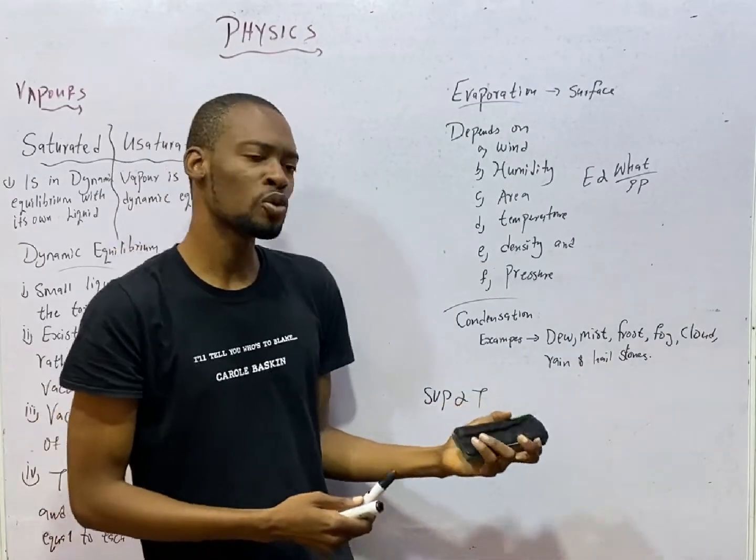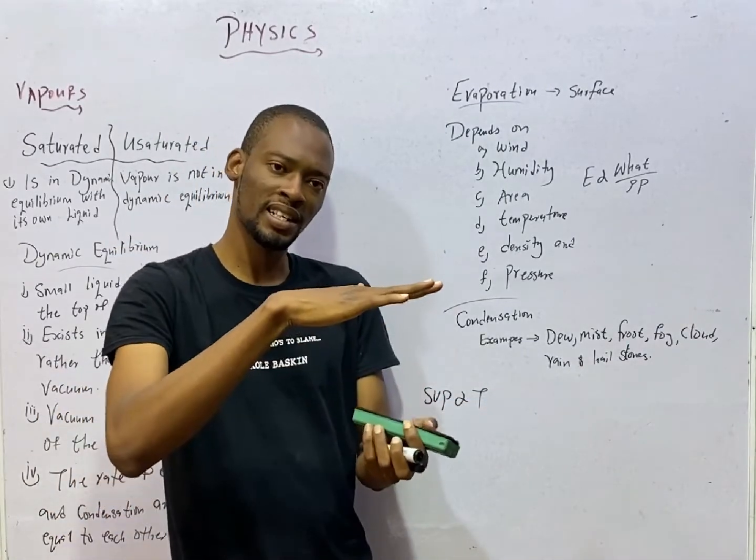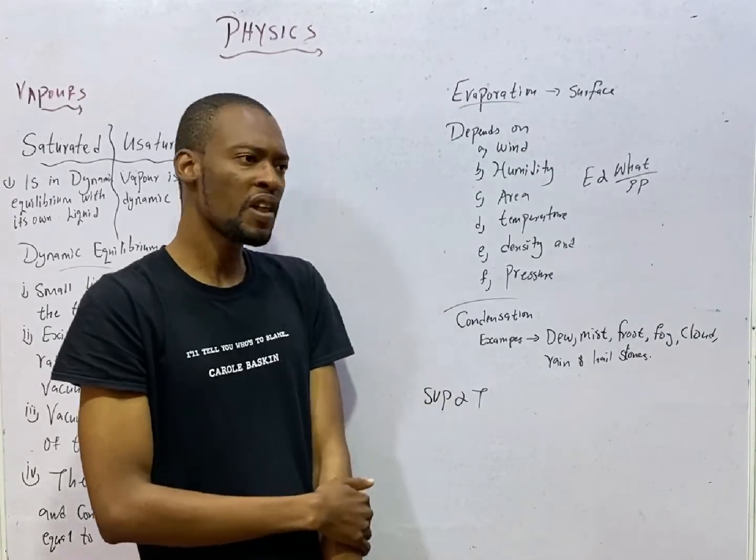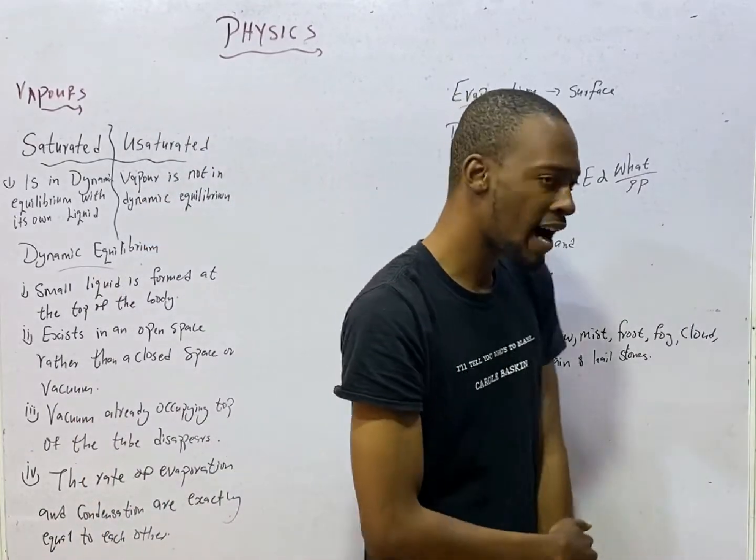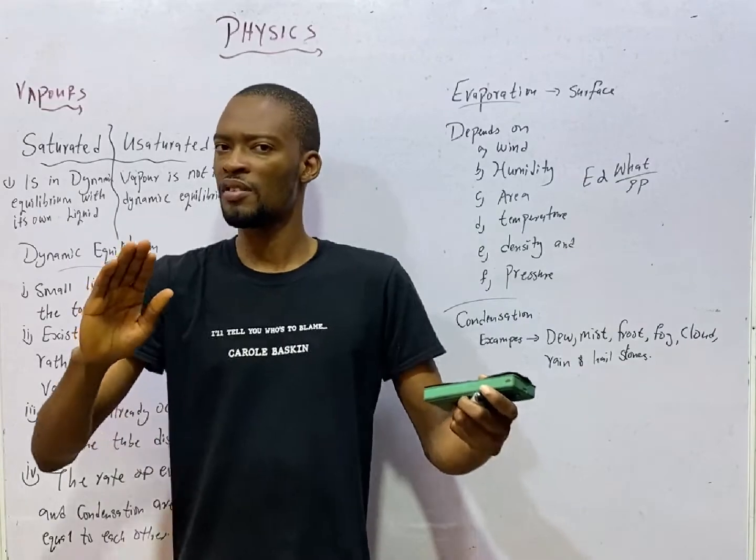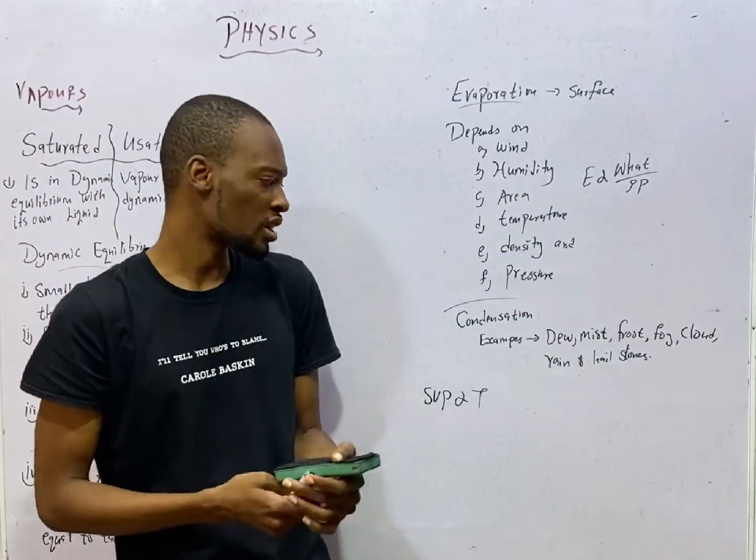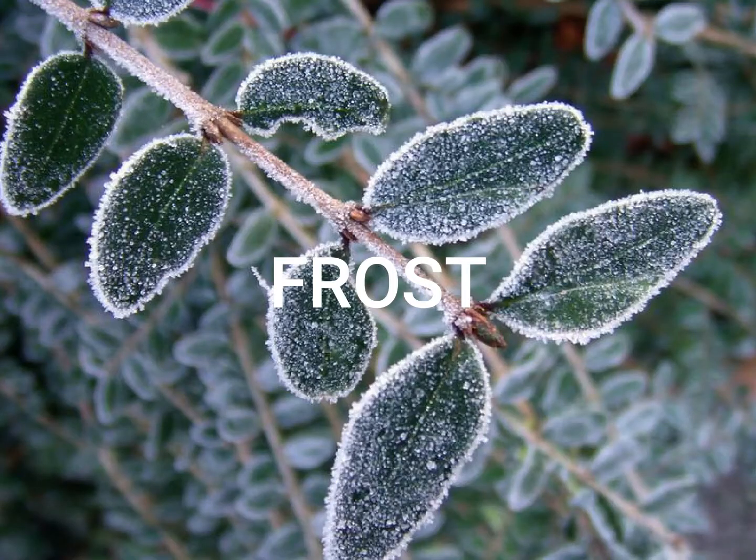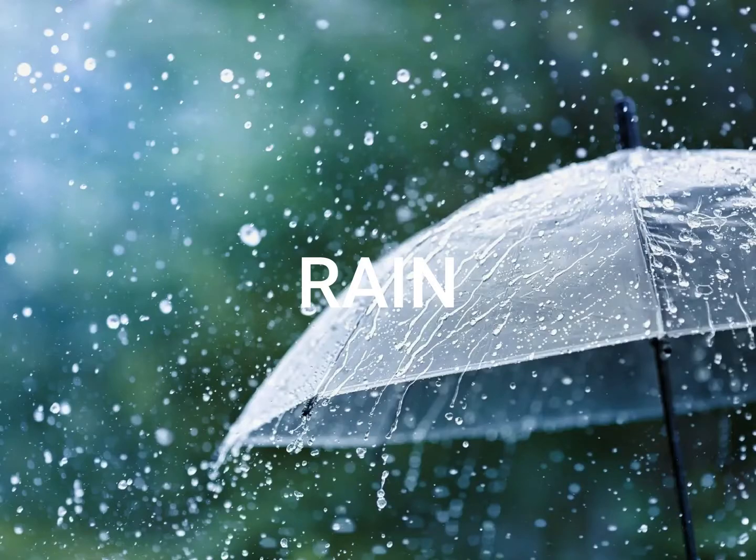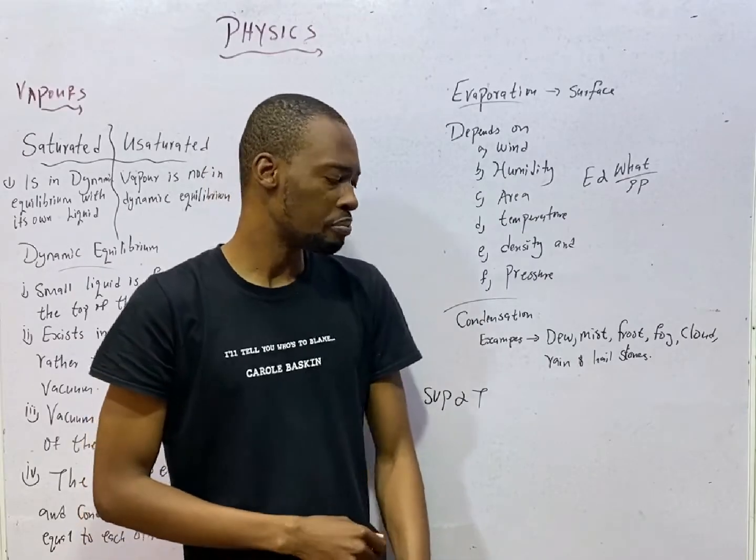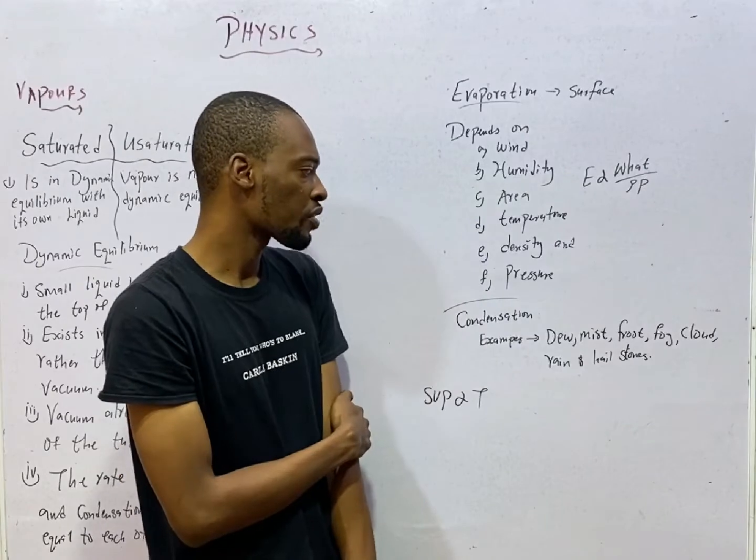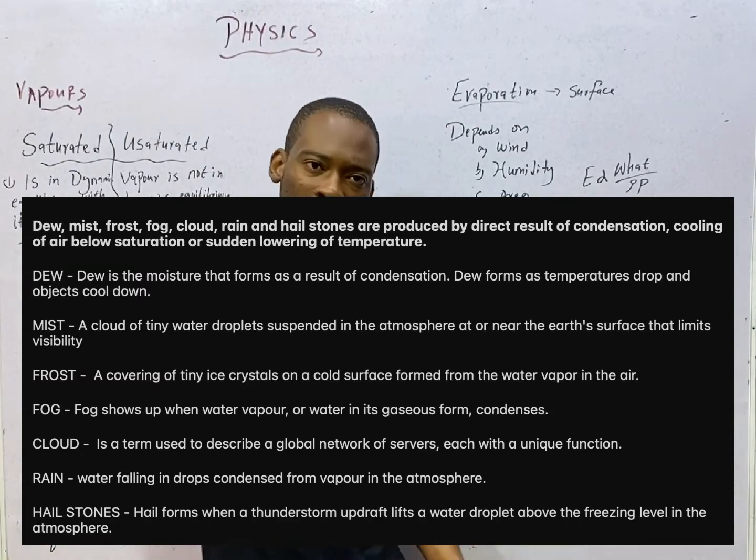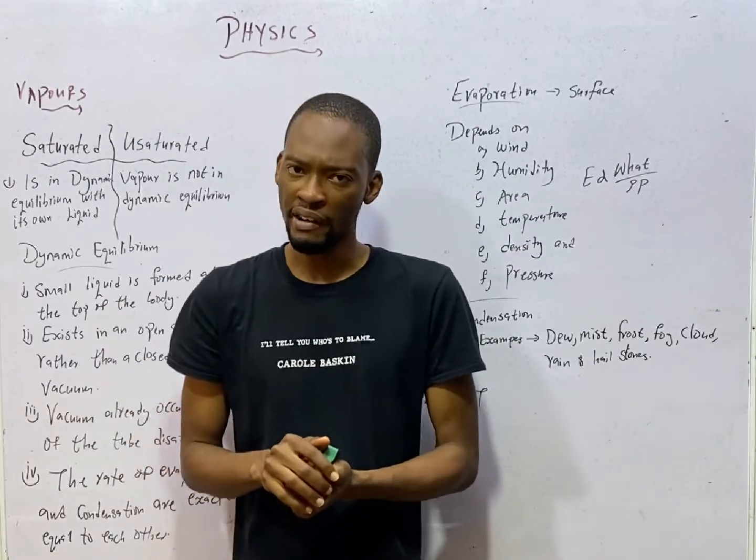Then there is a concept referred to as condensation. When gaseous state of matter changes to liquid from gas to liquid, that is condensation. The examples of condensations or applications or the results of condensation around us are dew, mist, frost, fog, cloud, rain, and hailstones. All these are examples of condensation taking place around us.